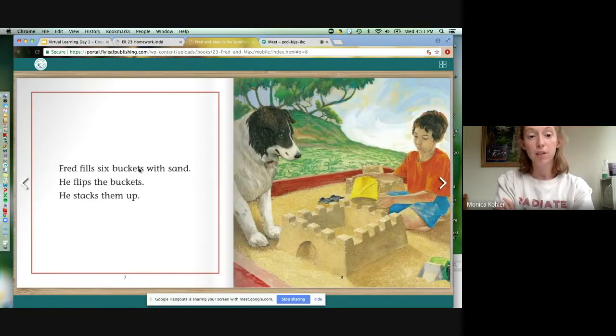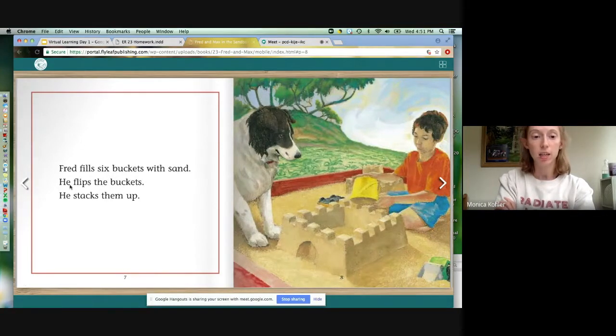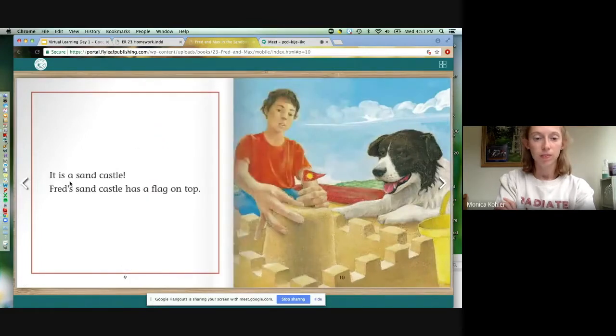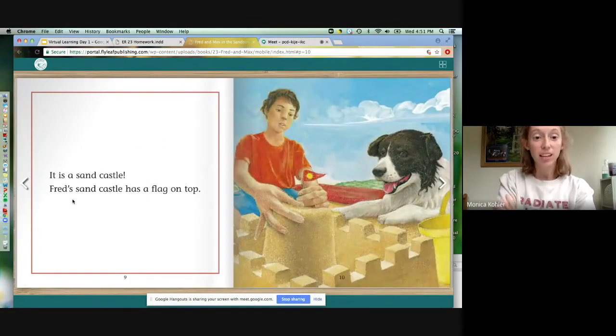Max can be a big hill for Fred's trucks to go on. See, he's driving his truck. Fred fills six buckets with sand. He flips the buckets. He stacks them up. It is a sandcastle. Fred's sandcastle has a flag on top.